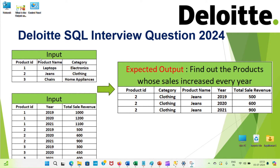I have two input tables. One table has product information — product ID, product name, and category. Another table has total sales revenue based on each year. The goal is to find products whose sales increased every year.